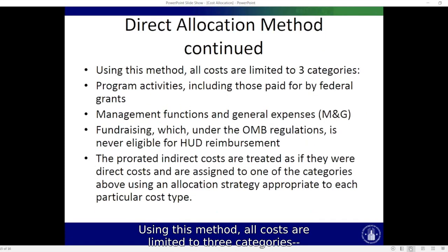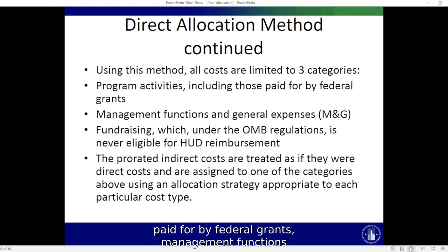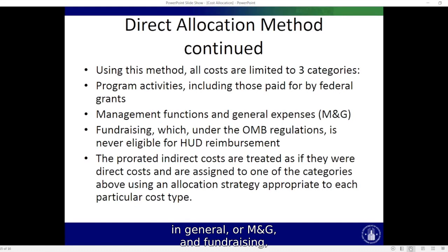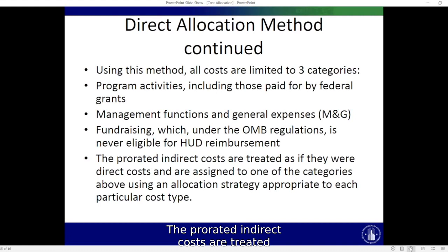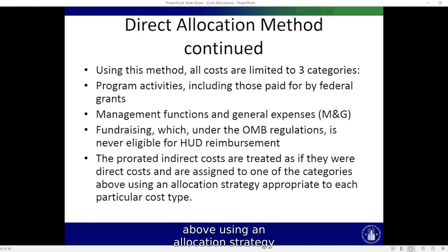Using this method, all costs are limited to three categories: program activities including those paid for by federal grants, management and general expenses (M&G), and fundraising — which under OMB regulations is never eligible for HUD reimbursement. OMB stands for the Office of Management and Budget. The prorated indirect costs are treated as if they were direct costs and are assigned to one of these categories using an allocation strategy appropriate to each particular cost type.